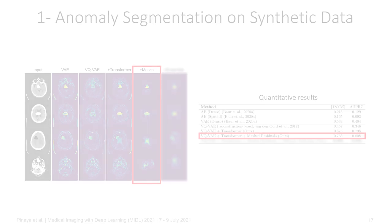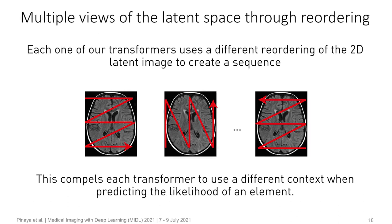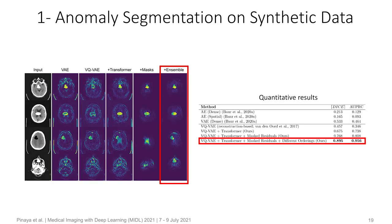Next, to increase the robustness of our method, we also use an ensemble of transformers. For each transformer, we use a different way to reorder our 2D latent representation into a sequence. Since our autoregressive models rely on previous elements to predict the value of the next element, by having different orderings of the 1D sequence, we compel each transformer to use a different context of the input image when predicting the likelihoods. With the ensemble of transformers, we improve the performance of our method by a large margin, obtaining a best achievable DICE score of almost 0.9.